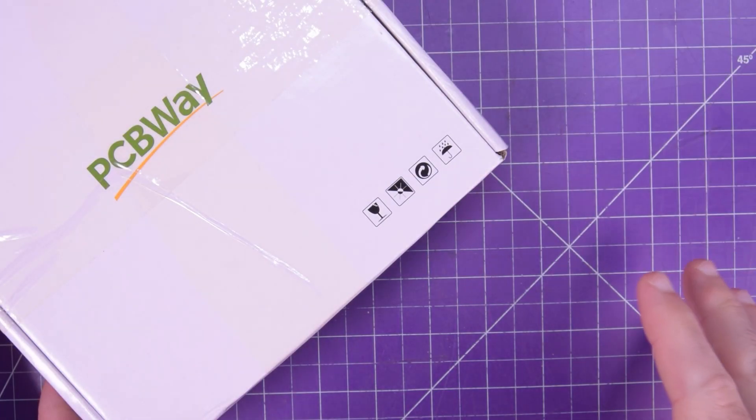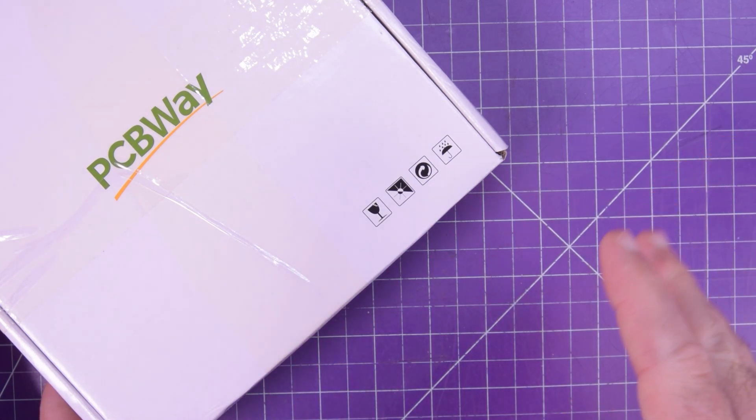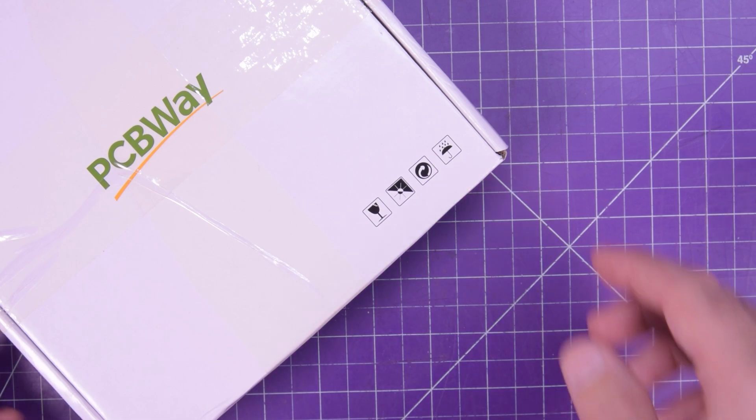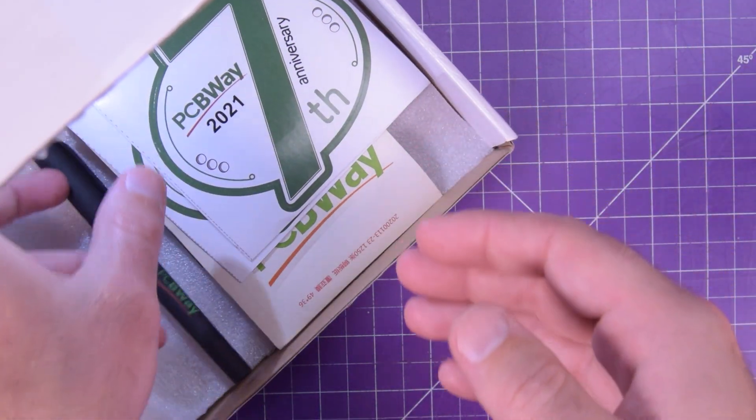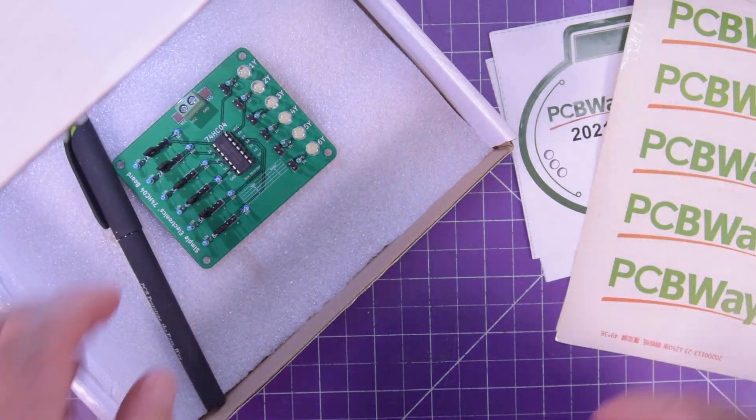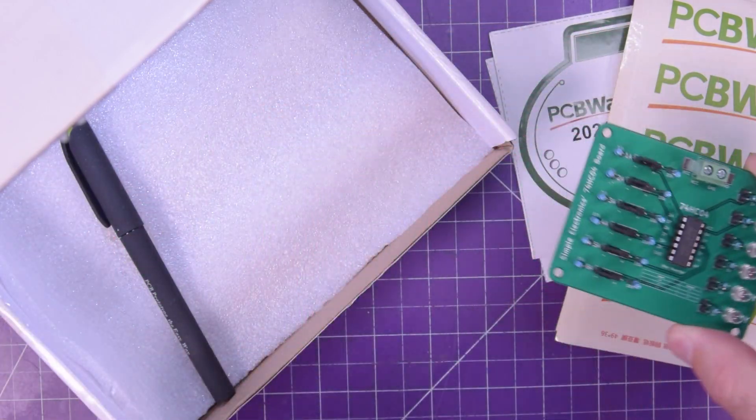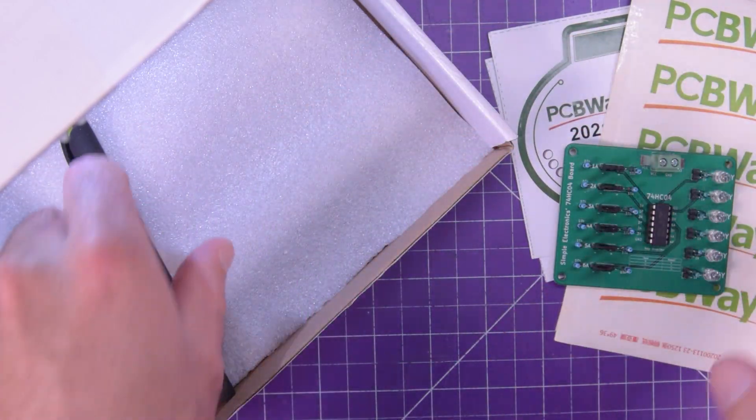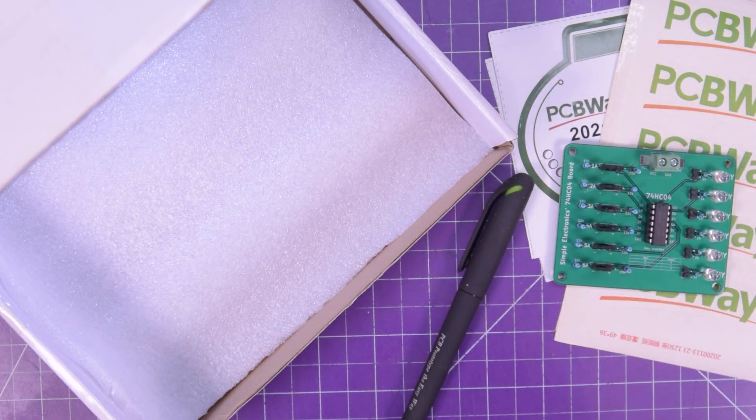Hey again and welcome back to my 74HC Logic Chip Series sponsored by PCBWay. Today's video is on the 74HC04, and I just want to remind you that everything we're going to be doing today can be done on a breadboard using jumper wires. But I find that these custom-made PCBs make everything a little bit clearer, easier to follow, and a lot neater. Let's get started.